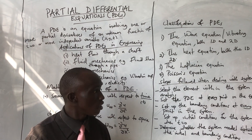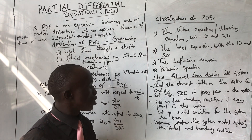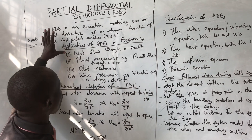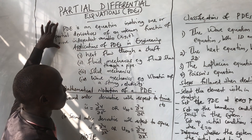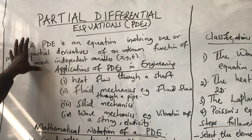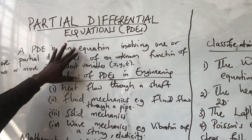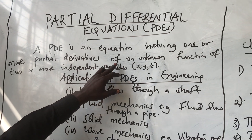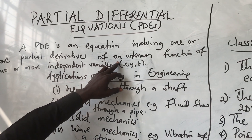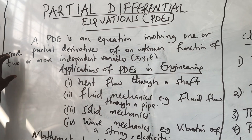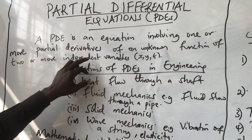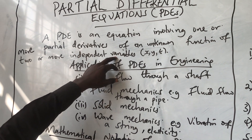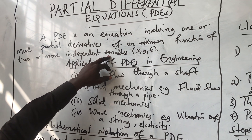First, we have to understand what a PDE is. A PDE is an equation involving one or more partial derivatives of an unknown function with two or more independent variables.